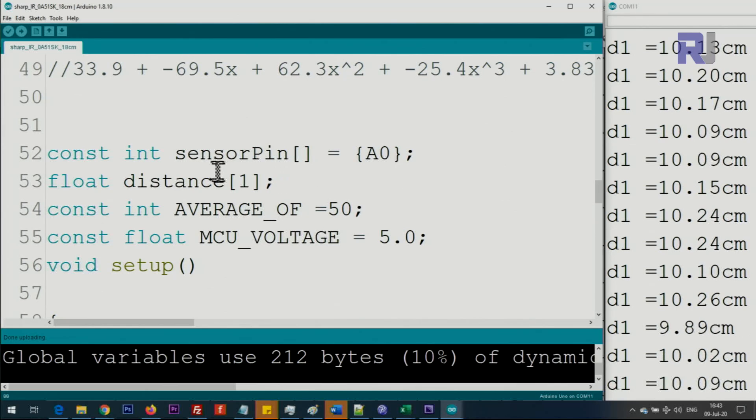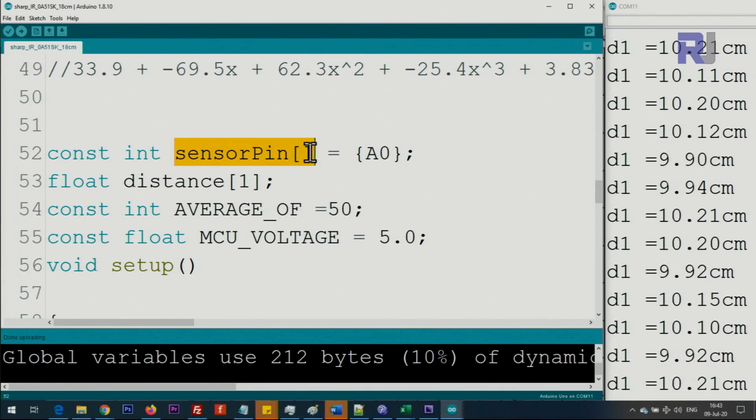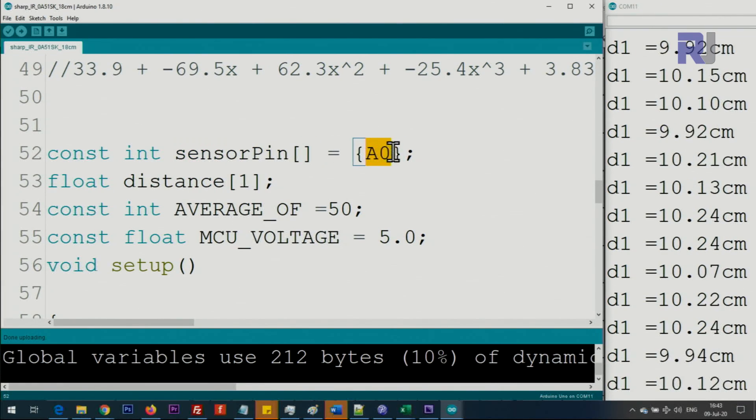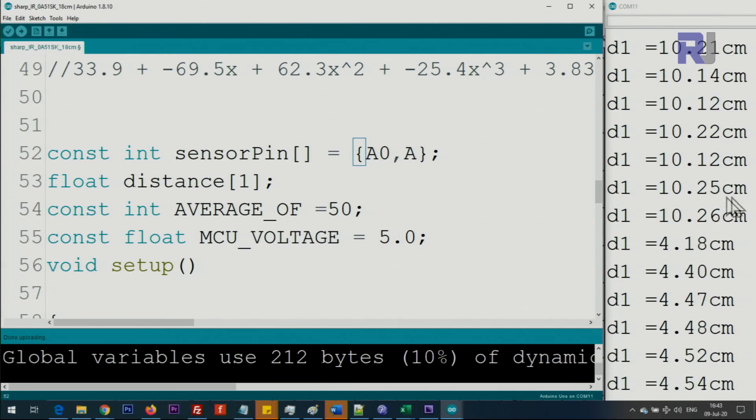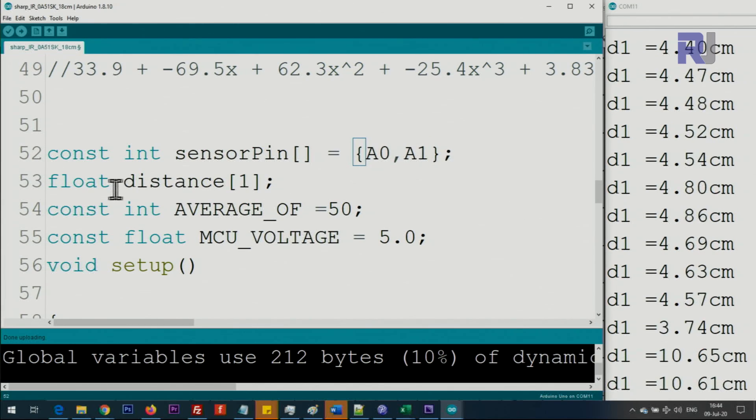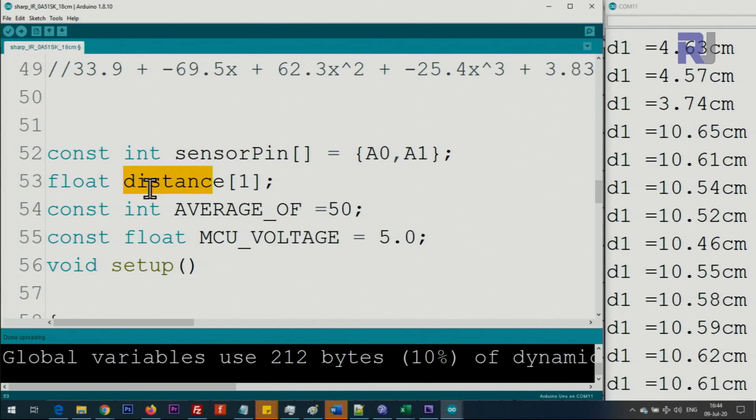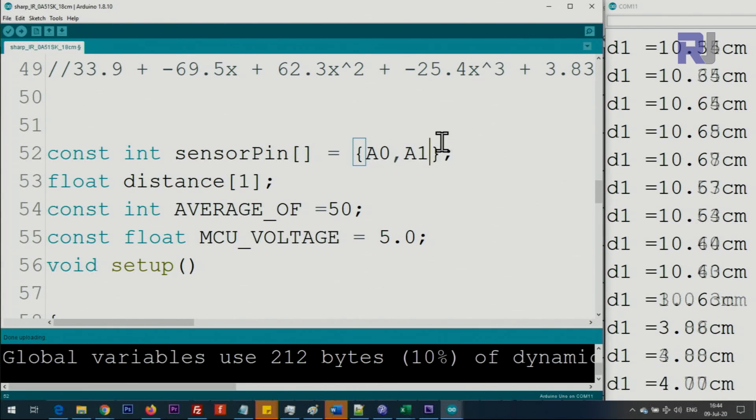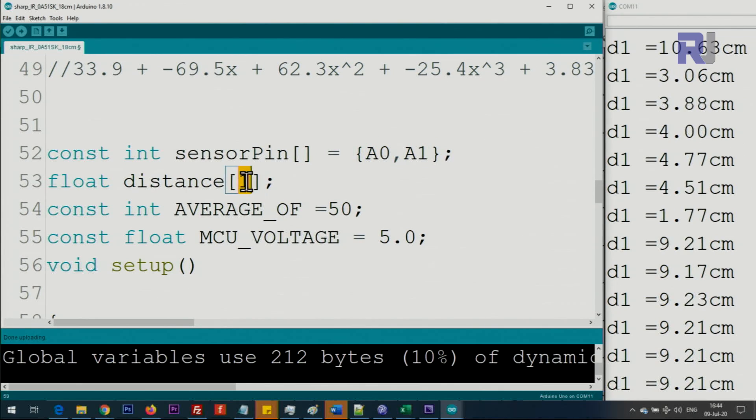Now let me explain the code. I've kept in mind that you can use multiple sensors. Here we are defining an array for pins - I used analog 0. If you're using more than that, then define the pins here, for example analog 1 and 2. This array is holding the distance for each sensor. Because I have only one, I put here one, but if you have two, you must put here two otherwise you will get errors because they must match.